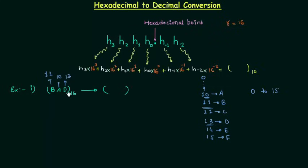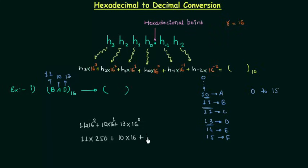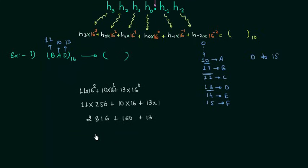We follow the same procedure. I will multiply 13 by 16 raised to power 0, multiply 10 by 16 raised to power 1, and multiply 11 — because B is 11 — by 16 raised to power 2. 16 raised to power 2 is 256. So: 11 multiplied by 256 is 2816, plus 10 multiplied by 16 is 160, plus 13 multiplied by 1 is 13. Adding these together, the answer is 2989 — the decimal equivalent of BAD in hexadecimal.